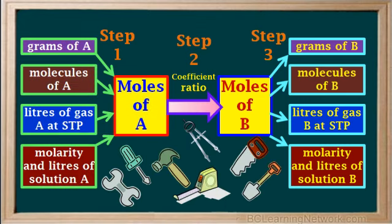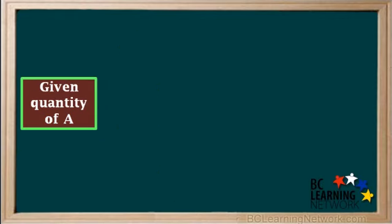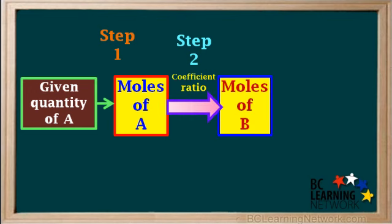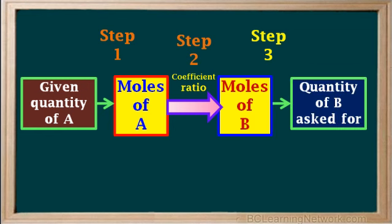At this point, you have all the tools that you need to make any of these conversions. Don't let this diagram scare you — it includes all of the possible conversions. Each problem you actually encounter will probably involve three conversions at the most. So the process of stoichiometry is really quite simple: you start with the given quantity of substance A, convert it to moles of A in step 1, use the coefficient ratio in the balanced equation to convert moles of A to moles of B in step 2, and in step 3, convert the moles of B to the quantity of B asked for.